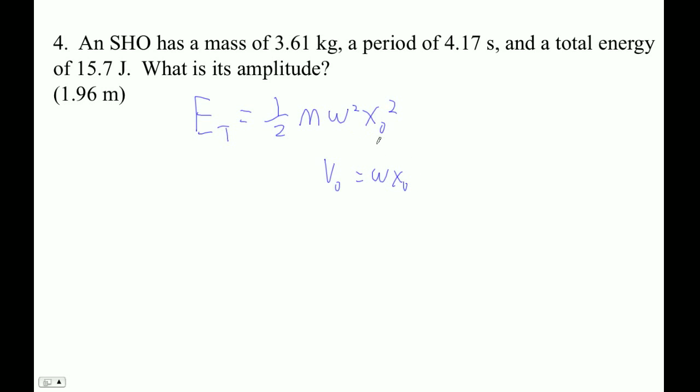It should be in the data packet, but it's not. All we have to do is turn this period into an omega. The other formula we use is omega equals 2 pi over the period.